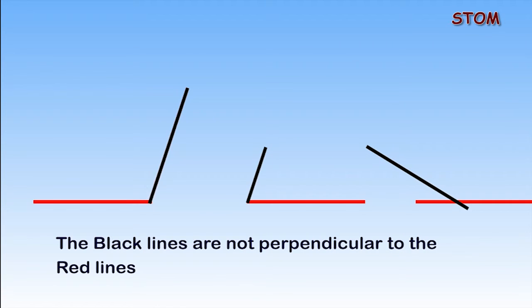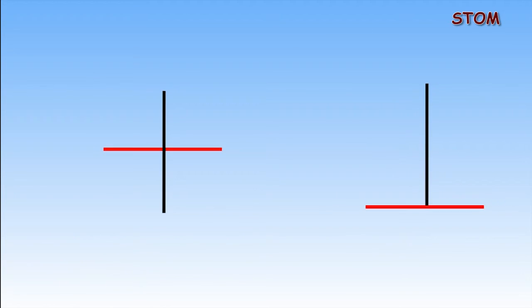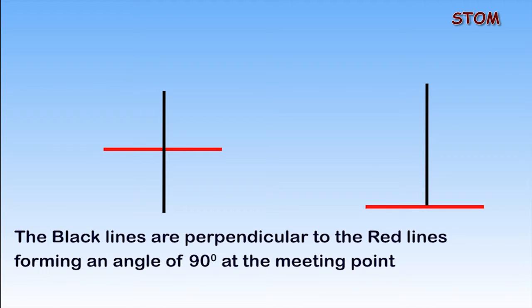These examples show lines that are not perpendicular to each other. The black lines are perpendicular to the red lines. However, in this example, the black lines are perpendicular to red lines forming a 90 degree angle at the meeting point.